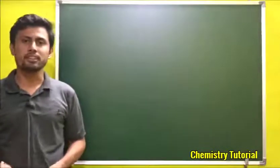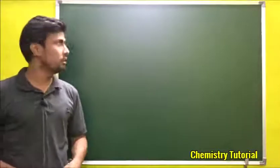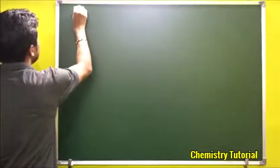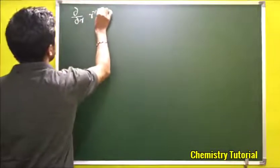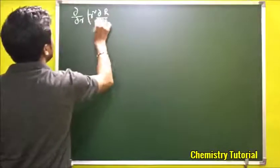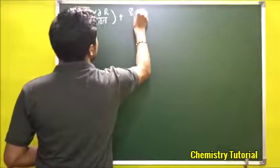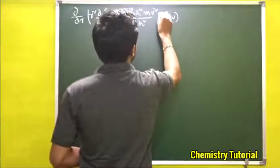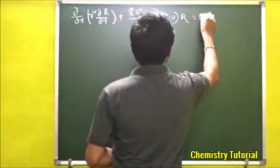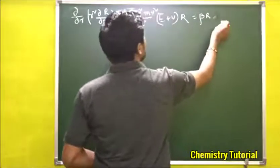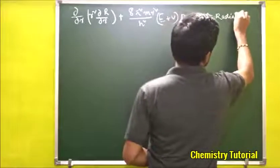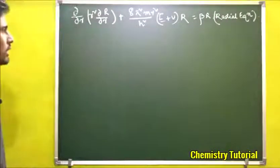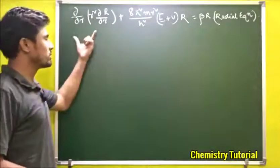In this video we are going to discuss the solution of the first part, that is the radial part of the Schrödinger equation. Let us see what the radial equation was. It was: d/dr of r² dβ/dr plus 8π²m divided by h² times (E + V(r)) times β times r. This is the radial equation we found in the last class.